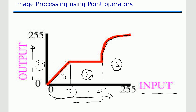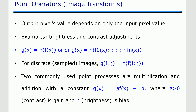As per your convenience you can transform input intensities into new intensities as per the demand of the application or computer vision project. The point operator is a very powerful tool because every pixel's intensity is taken into account and transformed into a new pixel value. In many applications, point operators are used. The output pixel value depends only on the input pixel value.